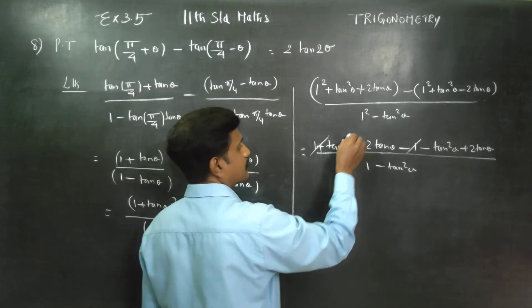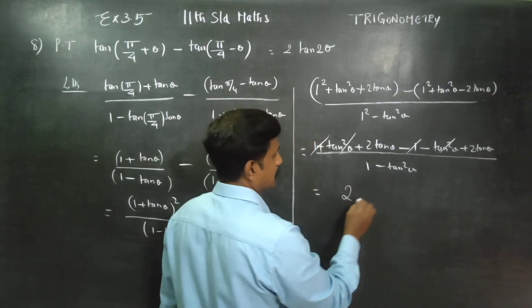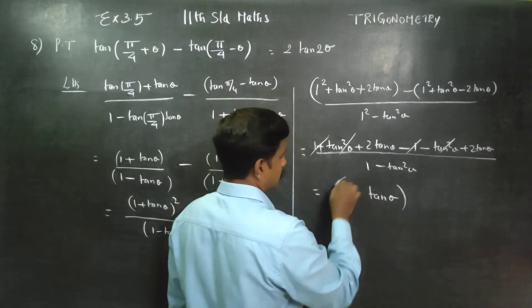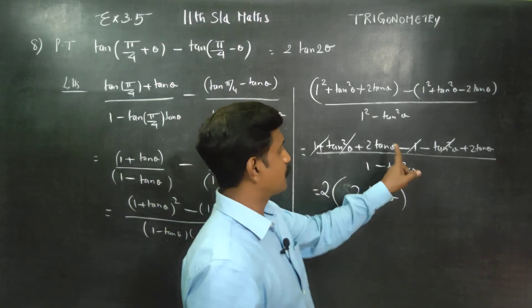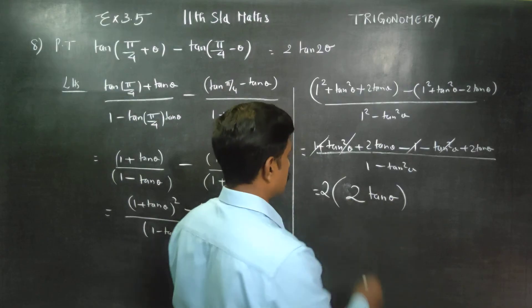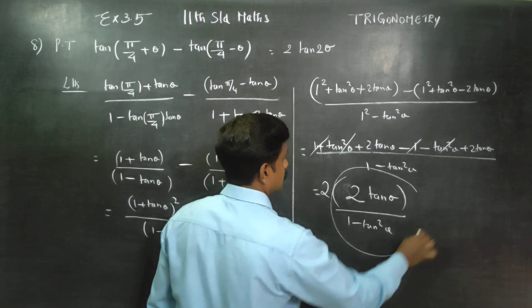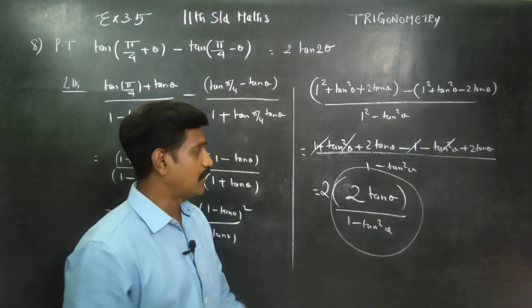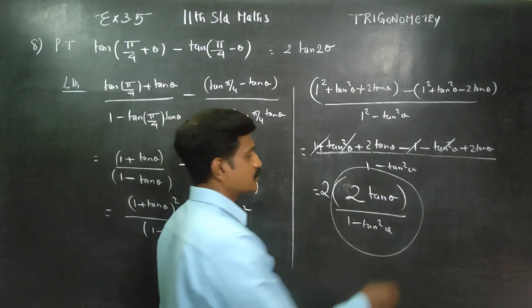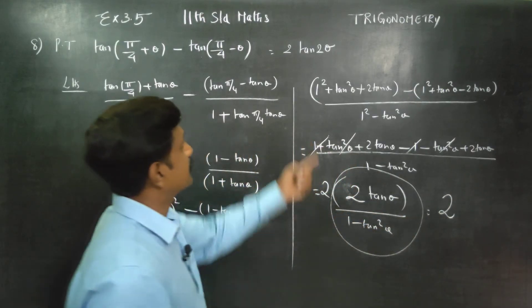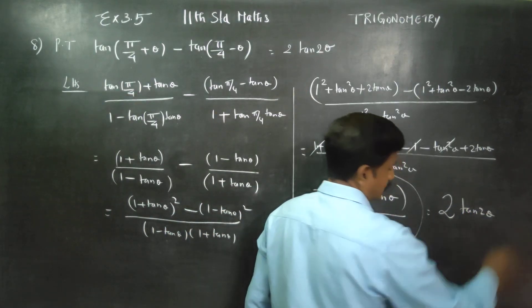1, 1 cancel. Tan square tan square cancel. This will add four times. 4 tan theta by, 2 tan theta by, 1 minus tan square theta. This is a double angle formula. 2a formula. Tan 2a is equal to 2 tan a by 1 minus tan square a. Therefore, 2 tan 2 theta is equal to 2 tan 2 theta. Thank you.